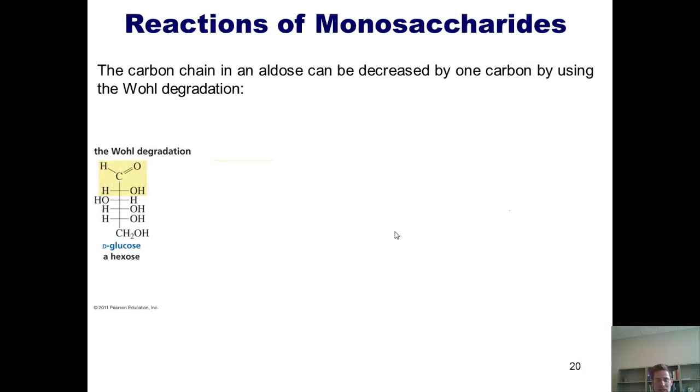So what happens if you're in the opposite scenario? That is, you want to shorten your aldose by one carbon. What can you do? Well, what you can do is submit your aldose to this sequence of reactions, which is called the Wohl degradation. I'll go through the sequence of reactions here. Imagine I begin with D-glucose, and I'm in a situation where I want to remove one carbon from D-glucose and convert it into the sugar that would have one carbon less in the chain.